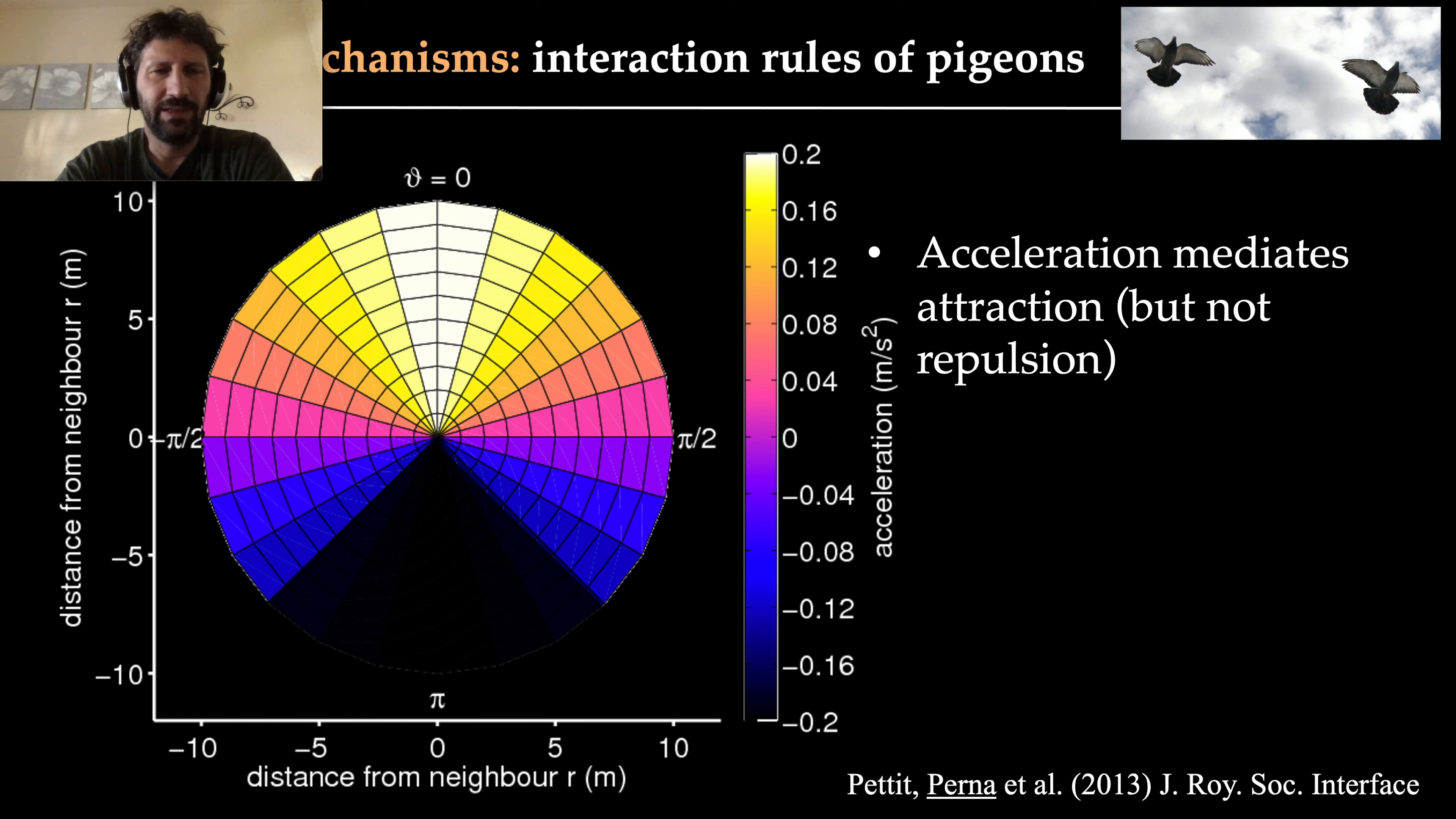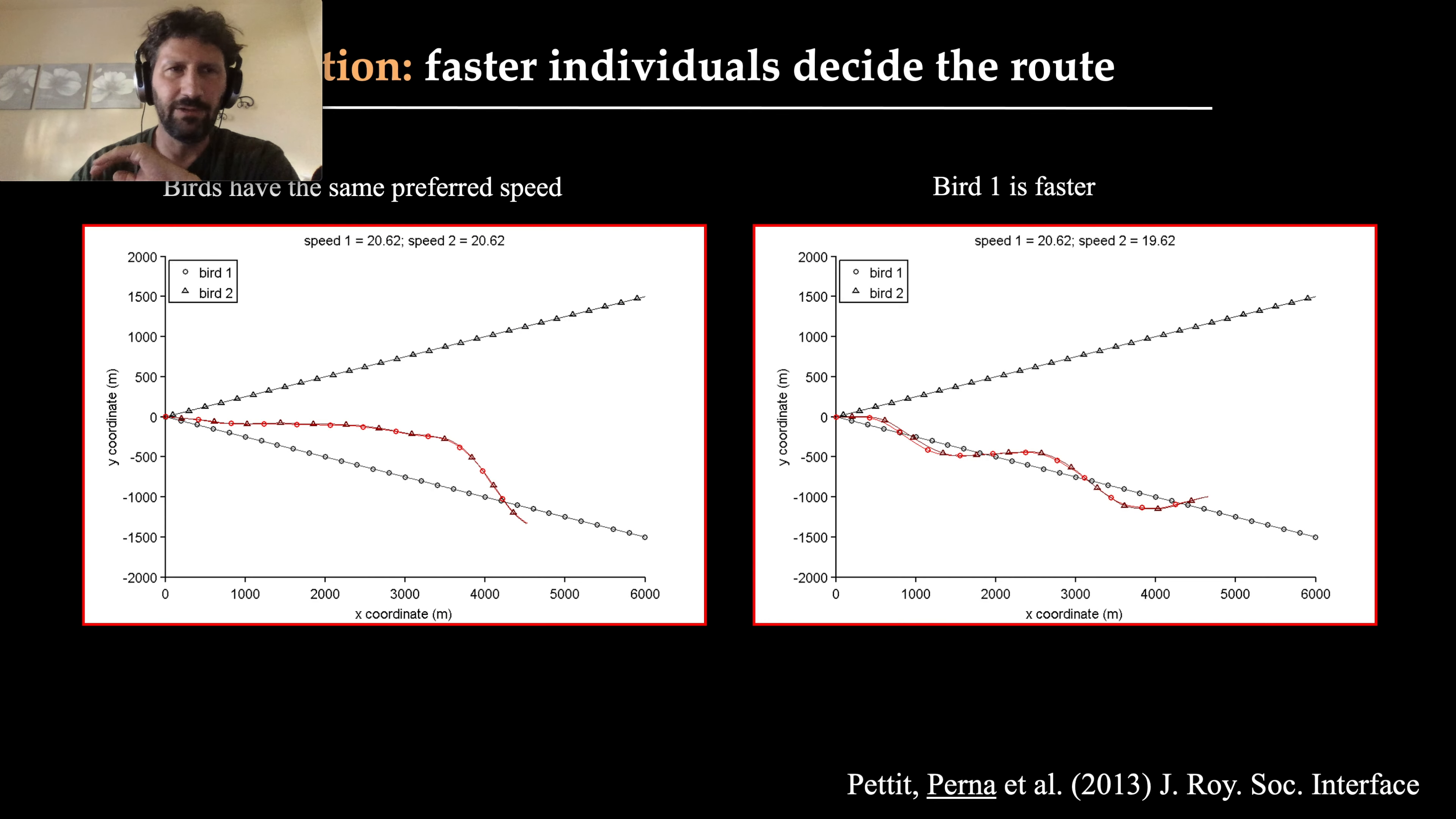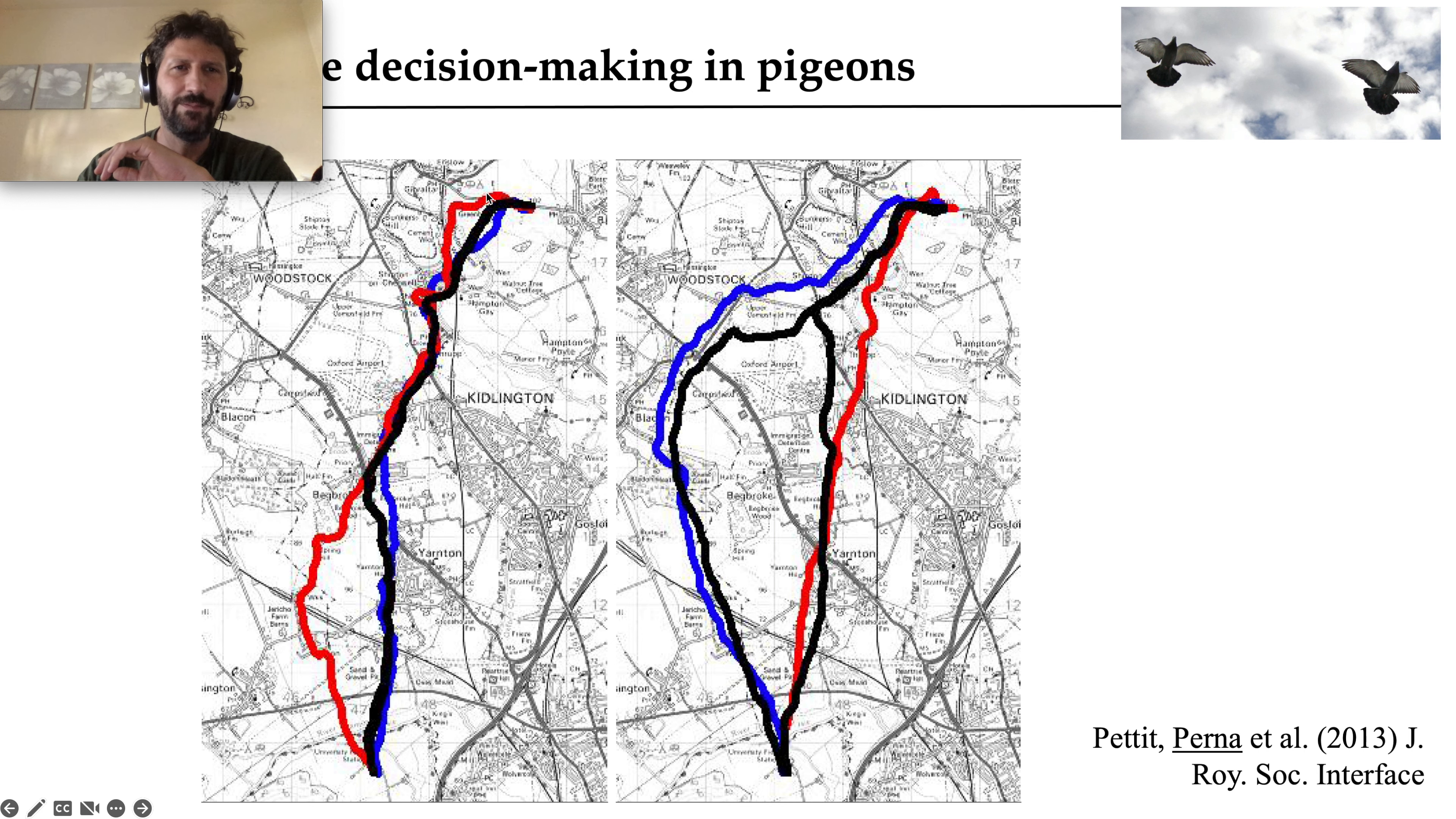Once we have these models fitted directly on experimental data, we can run simulations and make predictions about collective level patterns. One of these predictions for pigeons is important. I need to stop for a second and explain: when you release these pigeons many times from a certain place, they learn to go back home. Initially they are not very good, then they improve. As they learn, they develop a stereotyped route—they always take the same path to go back home. If you release one pigeon 20 times, they will always take this path. If you release another pigeon, maybe it will develop an alternative path that is different, and they stick to their own preferred choice.